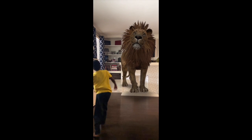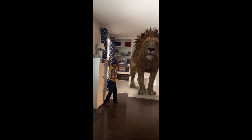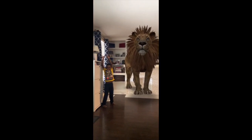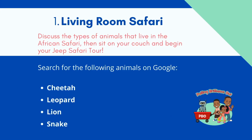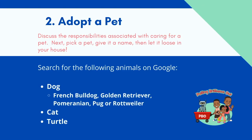Next thing you know, you'll have a lion in your living room. Here you can see Preston was having a lot of fun posing next to the lion. That brings us to our first idea: have a living room safari. Discuss the different types of animals that live in the African safari with your little ones, then set off in your jeep for a safari tour. Look up cheetah, leopard, lion, or snake as animals you might explore.